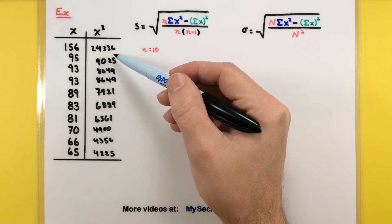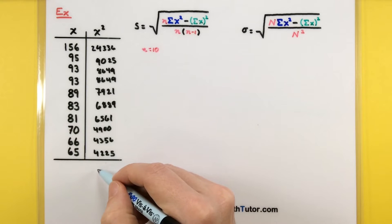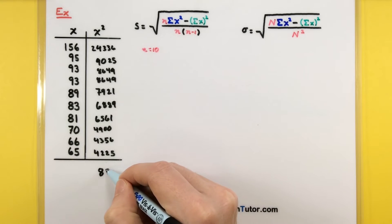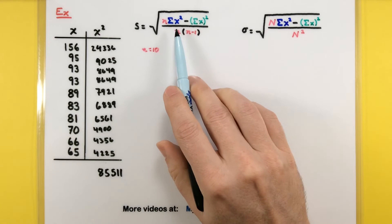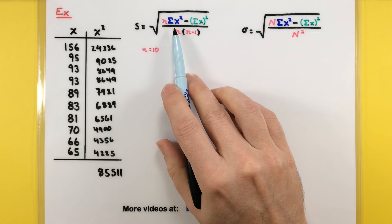Alright, so I've gone through each of our data points, I've squared each of them, and now we need to take the total. So, again, using a calculator, we could just add all of these up. In doing so, I get 85,511. So, this represents the sum of all of the x values squared.